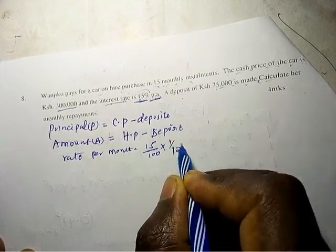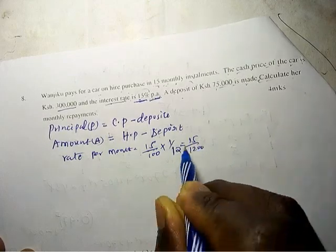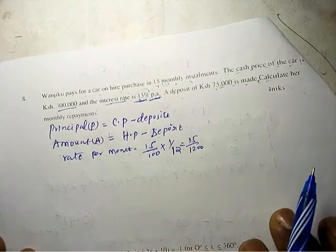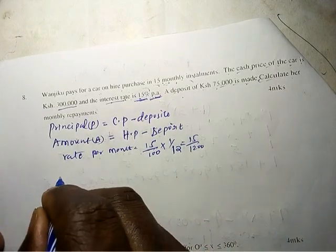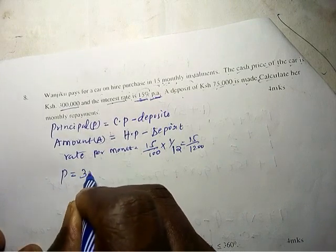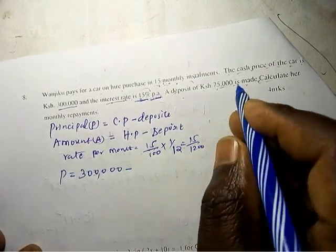That is because we are going to use months, very important also to note. So now we are going to calculate the principal. Our principal is going to be cash price which is 300,000 minus deposit which is 75,000.